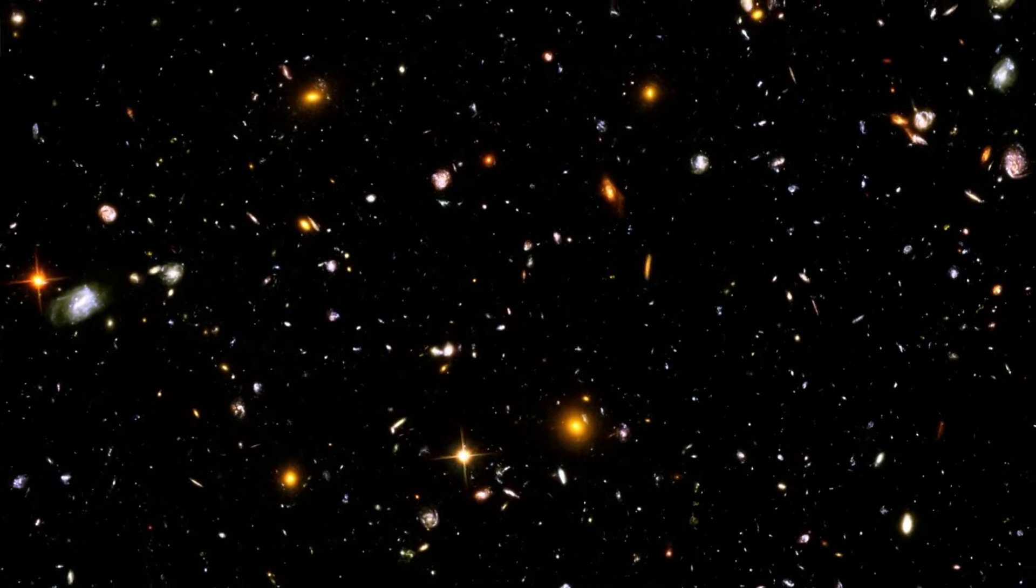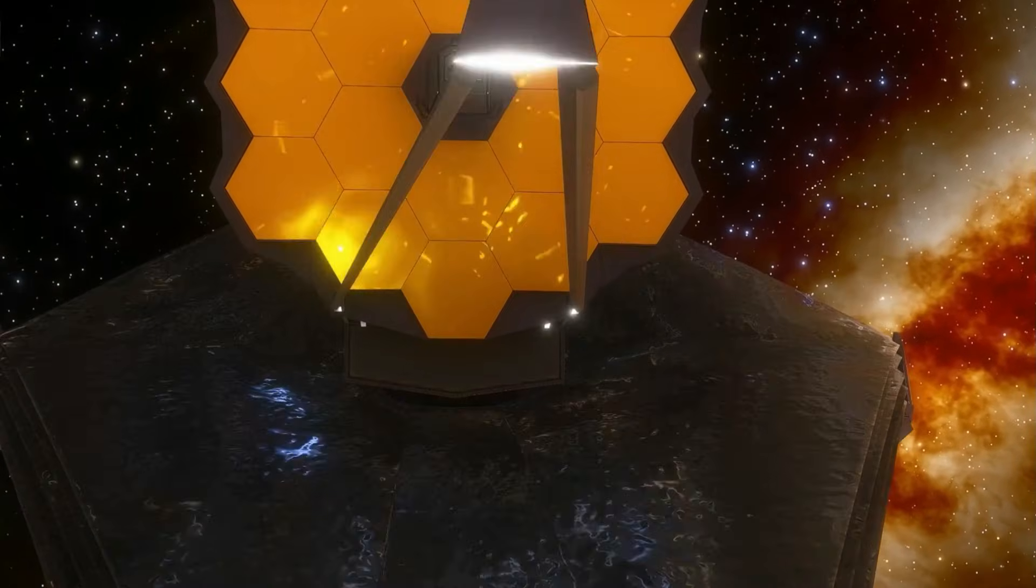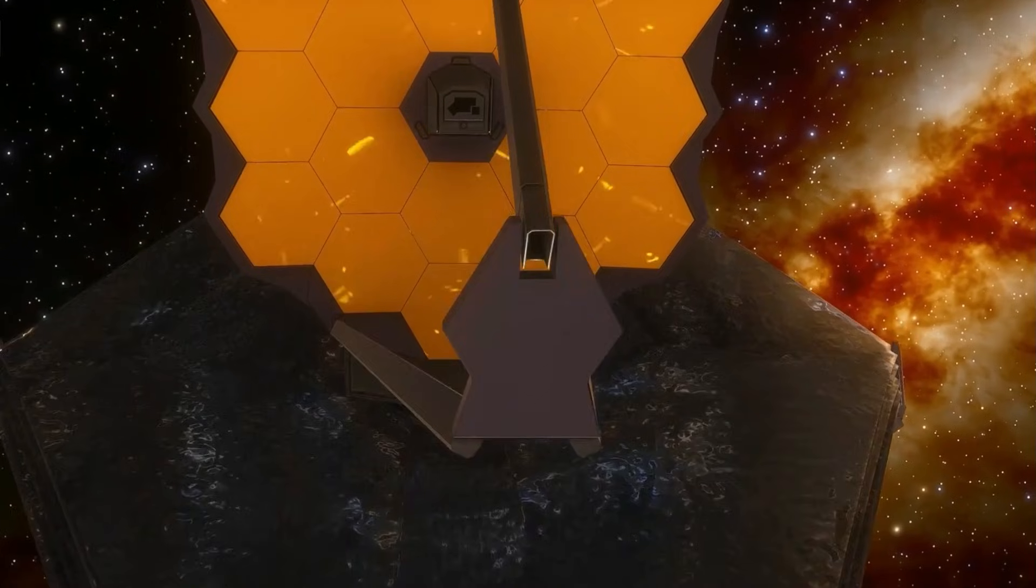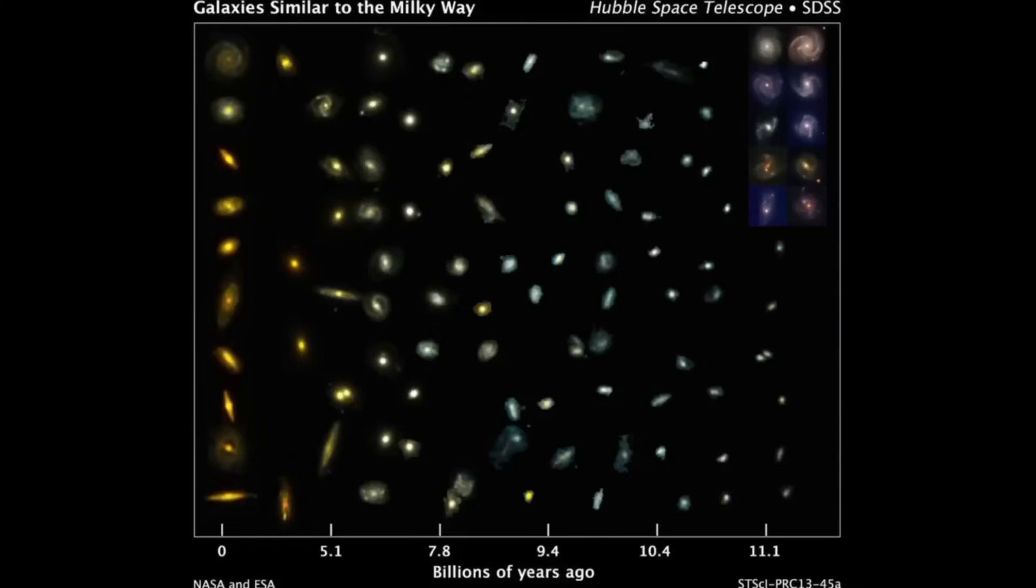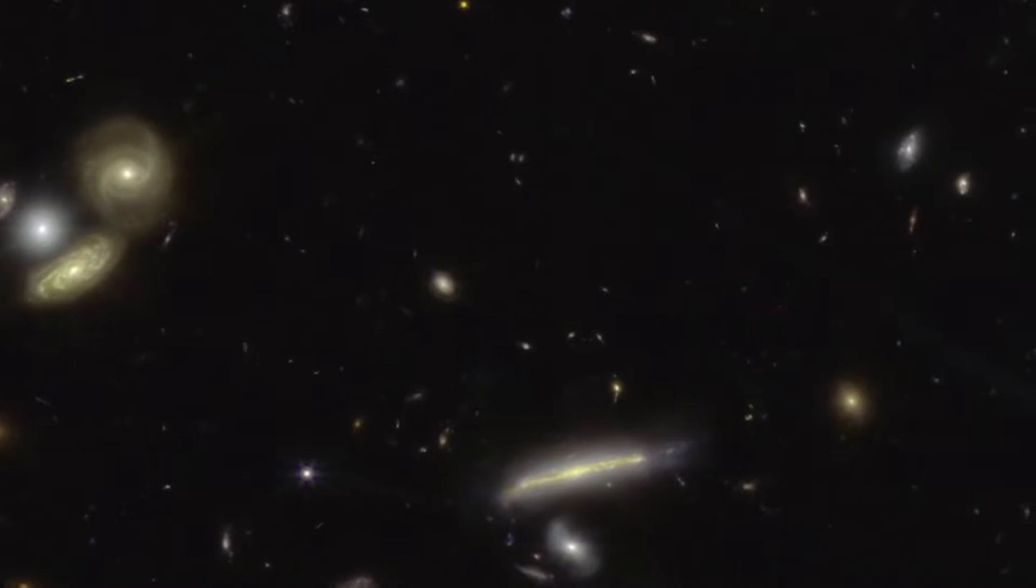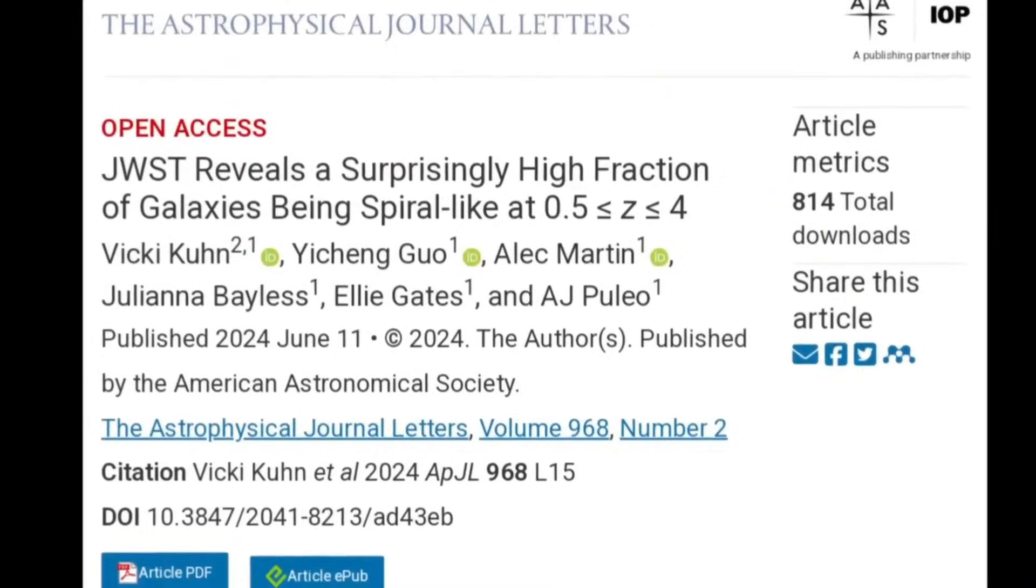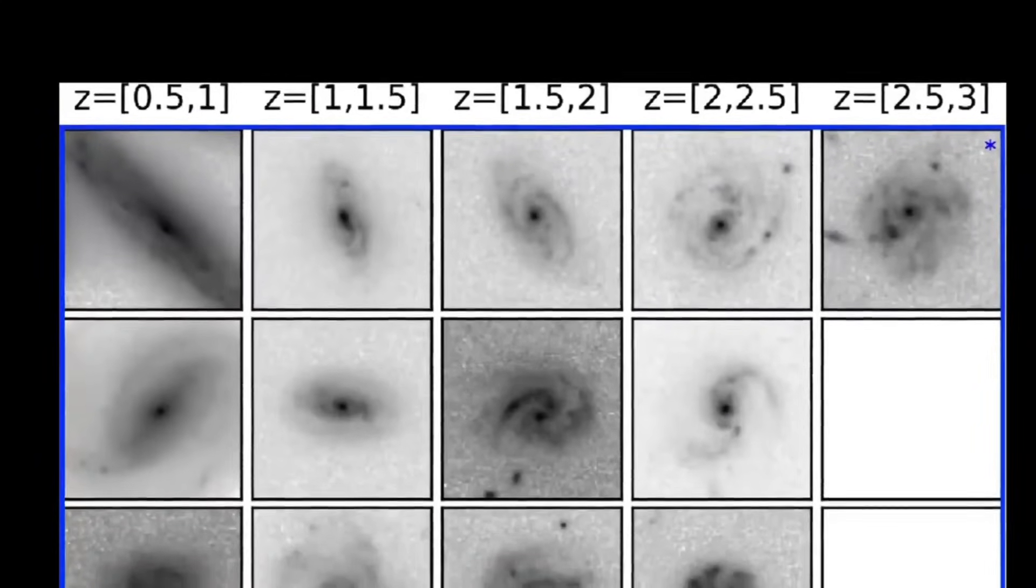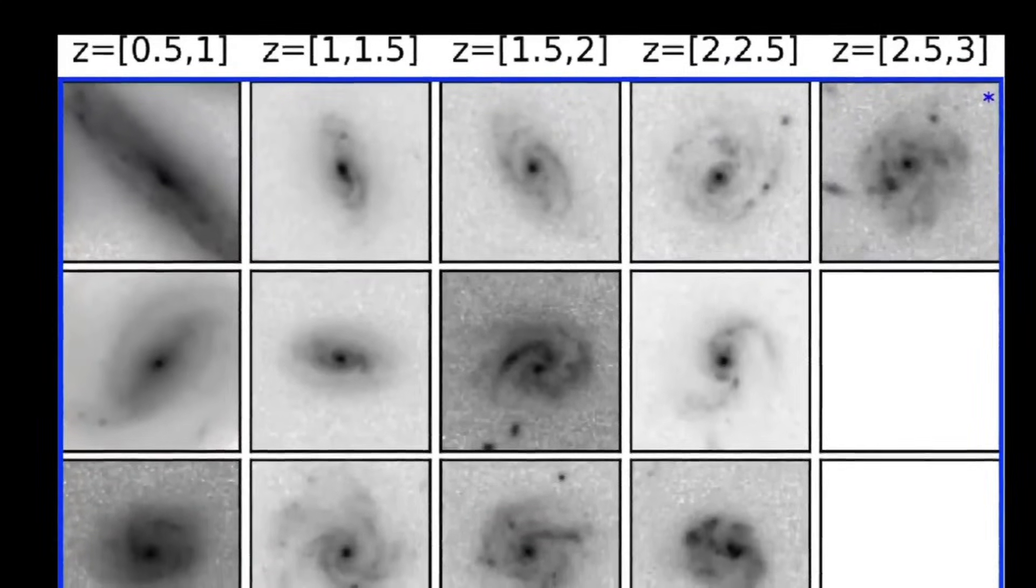But recently, the James Webb Telescope has discovered many giant and spiral galaxies like our galaxy in the distant universe. And this discovery has proved this galaxy evolution model wrong. The Webb Telescope found that spiral galaxies like our Milky Way were much more common in the early universe than previously thought. Their research revealed that about 30% of galaxies exhibited a spiral structure as early as 2 billion years after the universe's formation.